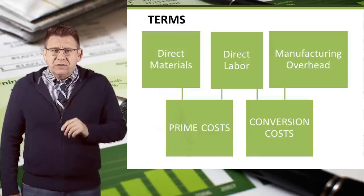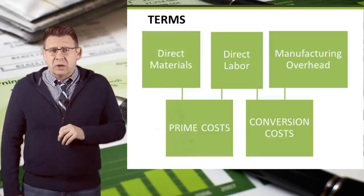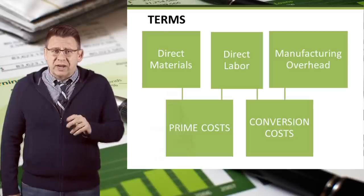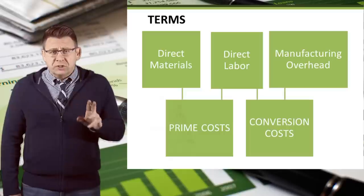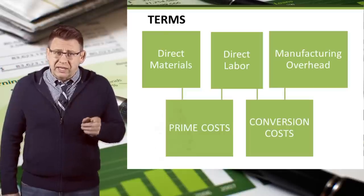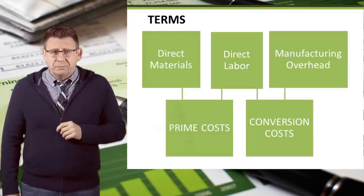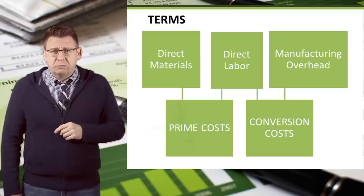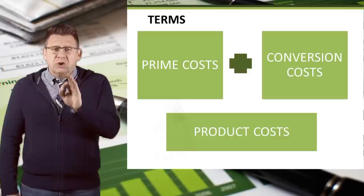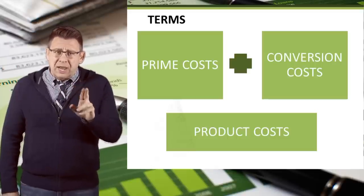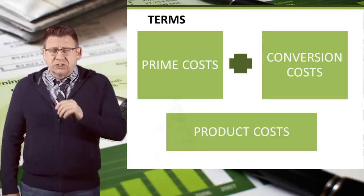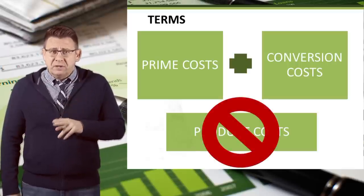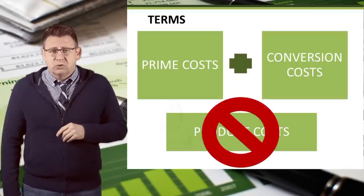Finally, let's conclude with a couple of additional terms. Prime costs include direct material and direct labor. Conversion costs include direct labor and manufacturing overhead — these are the costs incurred to convert materials into finished products. Make sure you don't make the mistake of adding prime costs plus conversion costs to get product costs, because they can't be added together as direct labor would be counted twice.